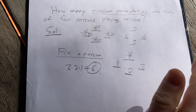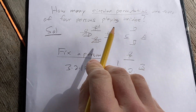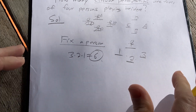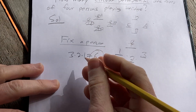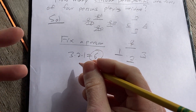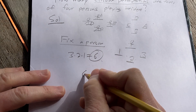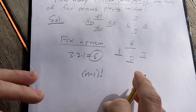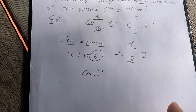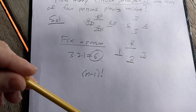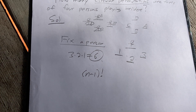So that would be the number of circular permutations of four people. In general, the formula, if you have n distinct objects, there are n minus one factorial circular permutations. I hope this video has been helpful and you've learned some mathematics. Good luck.